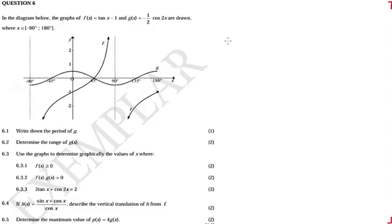So in the diagram below, the graphs of f and g are drawn, with x between minus 90 and 180 degrees. Question 6.1: determine the period of g. The g graph is actually the cosine graph. We can read the period from the graph, and I'll show you two ways of doing this.